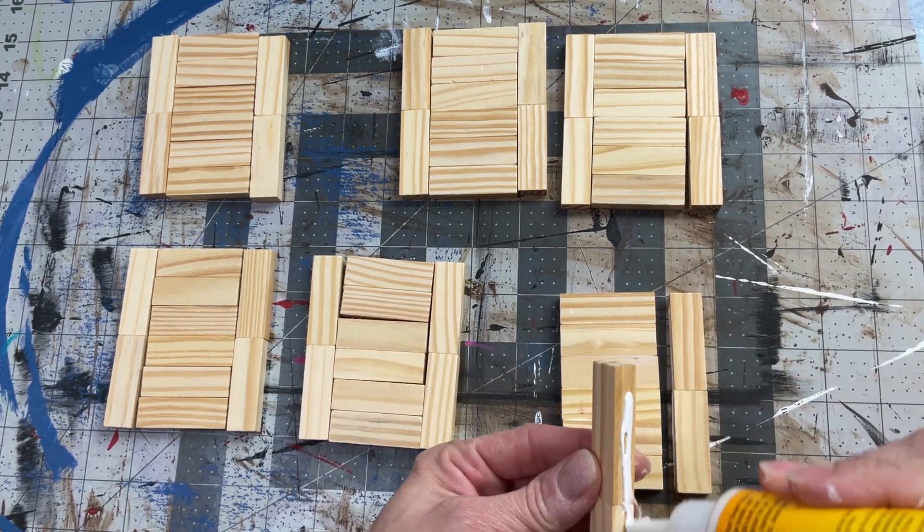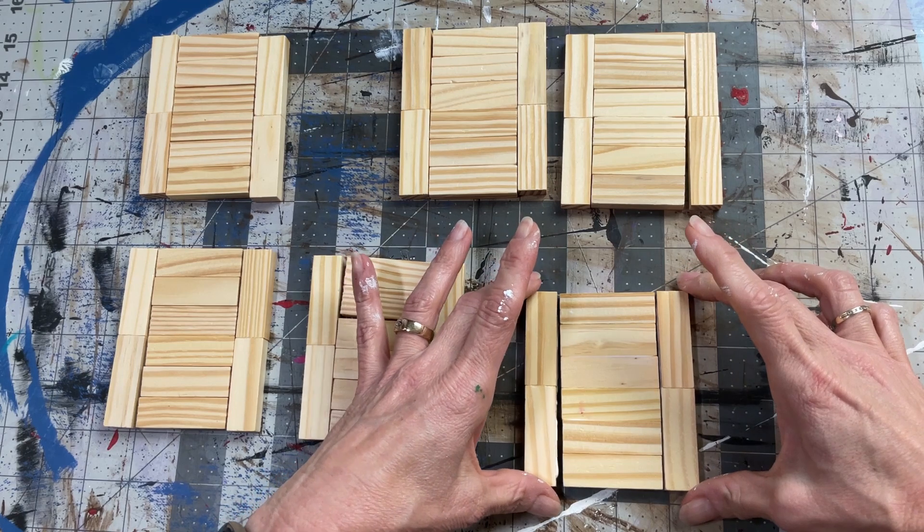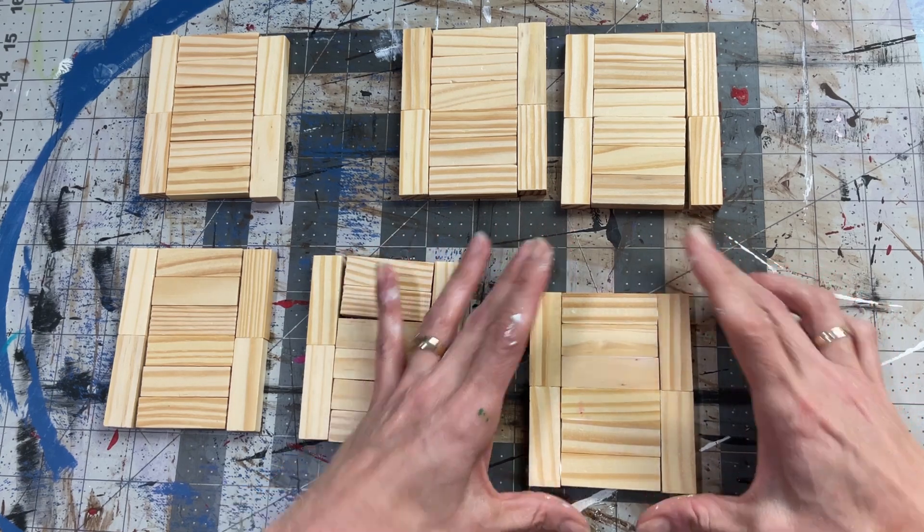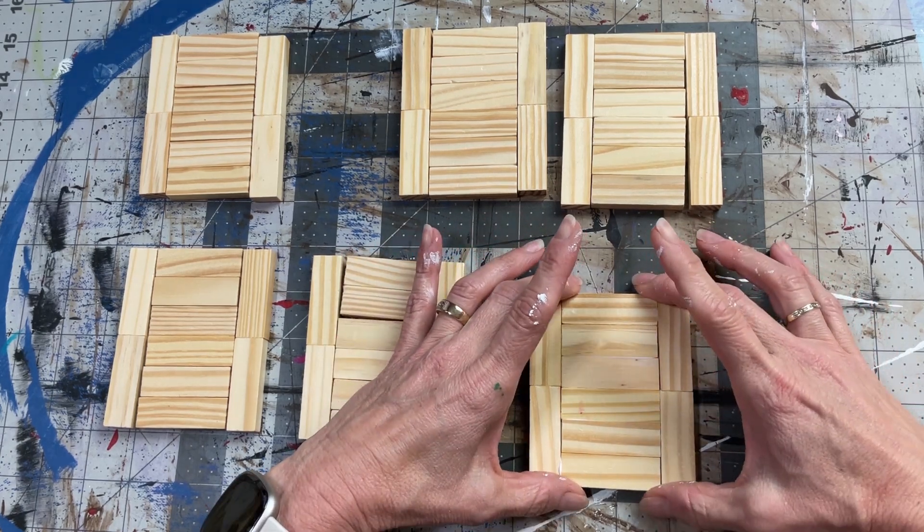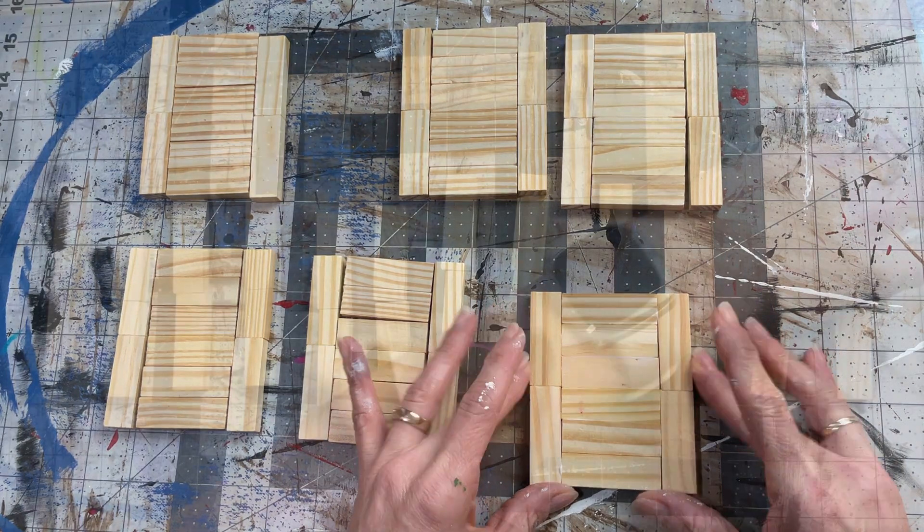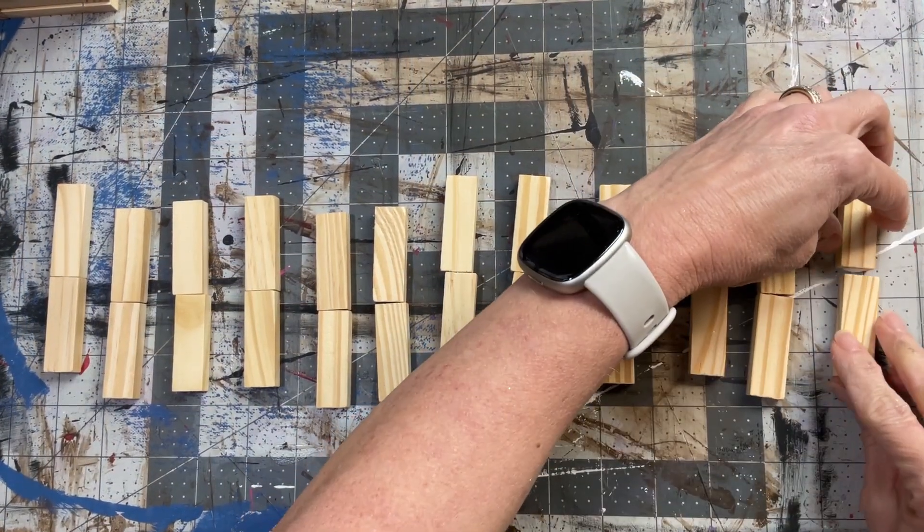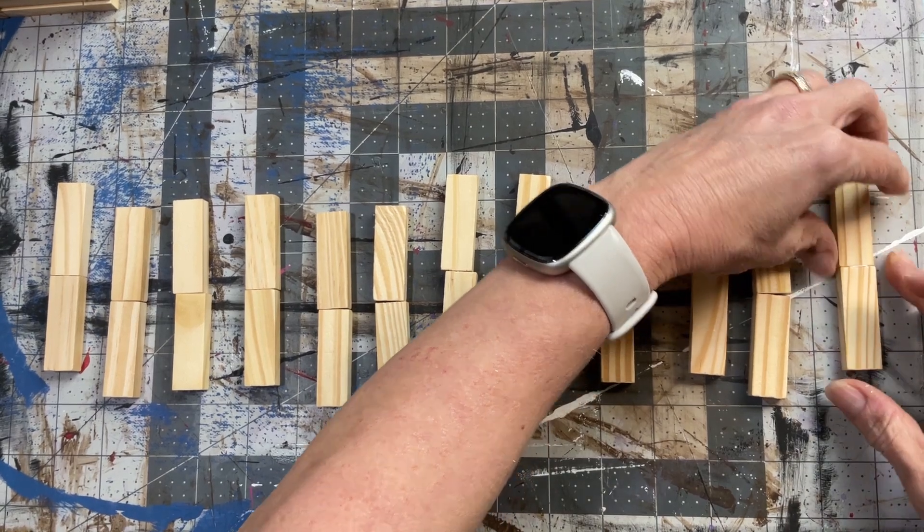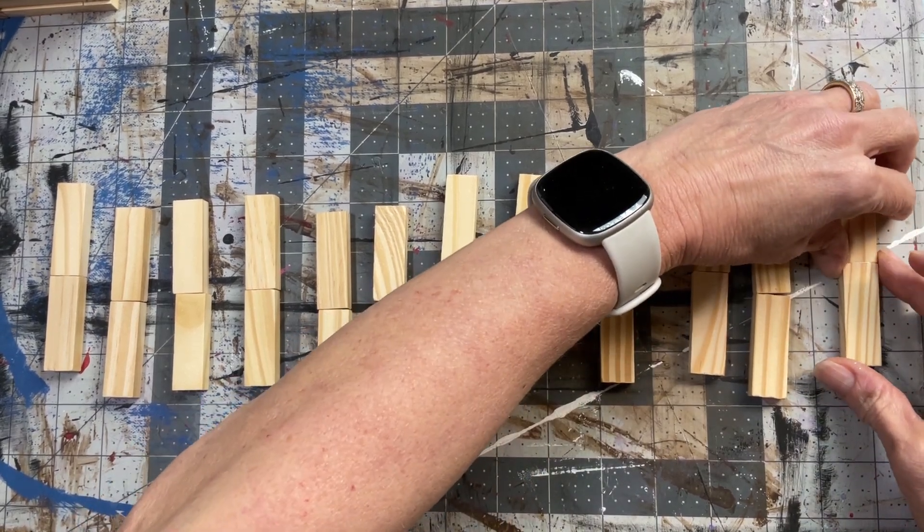There's glue there, glue on the other one, and we're going to line it all up and squish it together. So, like I said, you'll need two of those for each lantern.